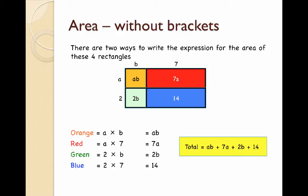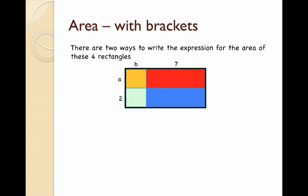Now let's take a look at what happens when we put brackets in. I've got the same lengths but instead of doing B and 7 separately I'm going to add them together, B plus 7, and instead of having A and 2 separately I'm going to add those together to get A plus 2. Now I can find the area by doing the length times the width, and this is going to give me an expression with brackets.